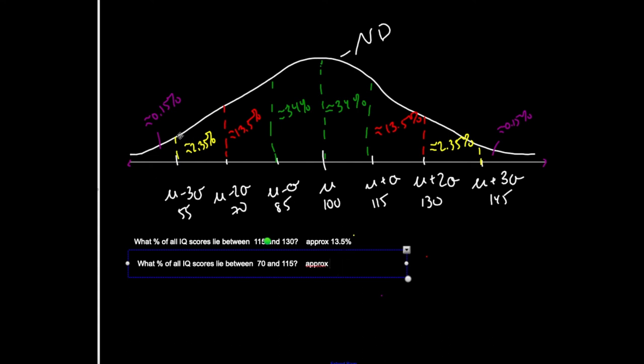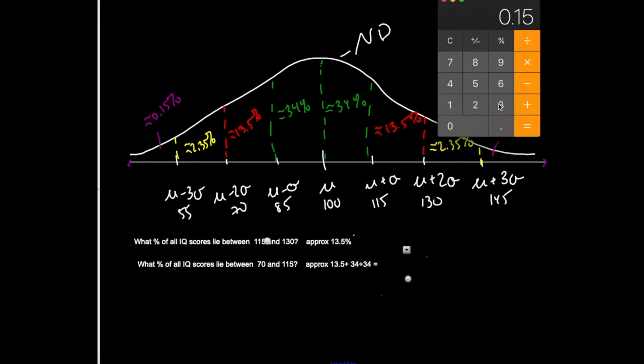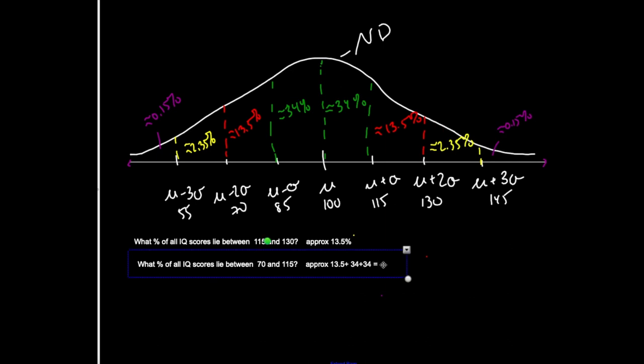But I already split it up into these separate percentages. So all I have to do now is add approximately 13.5% plus from 70 to 115. So 13.5, 34, and 34. So approximately, so technically 68 plus 13.5, right? 81.5% lie between 70 and 115.